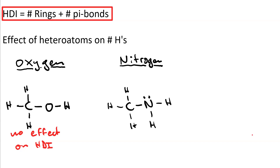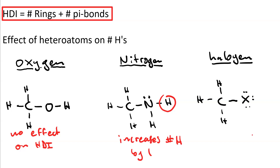If we replace the oxygen with nitrogen, then we add 1 hydrogen. So when you have a nitrogen, that increases your expected number of hydrogens by 1. If we replace one of the hydrogens with a halogen, represented here by X, we decrease by 1 the expected number of hydrogens.